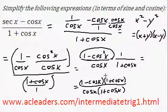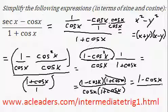Then, right now, we can actually cancel out these guys, and we're going to end up with 1 minus cos x, all over cos x.